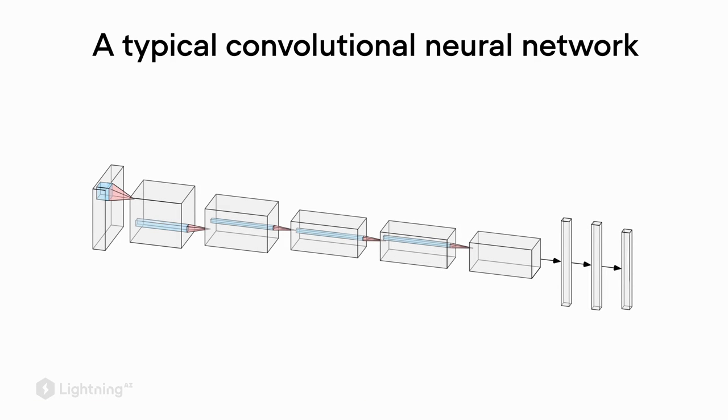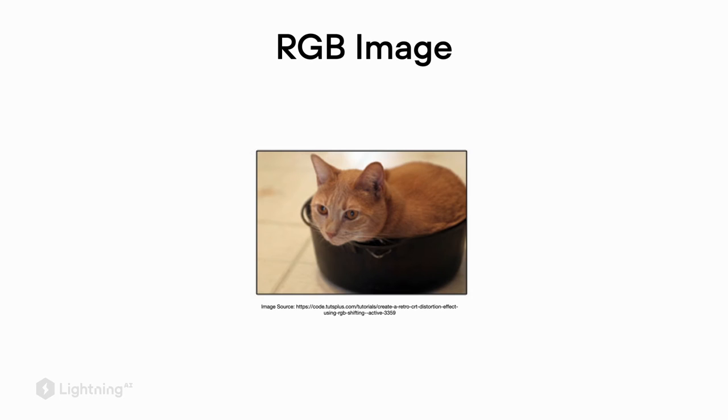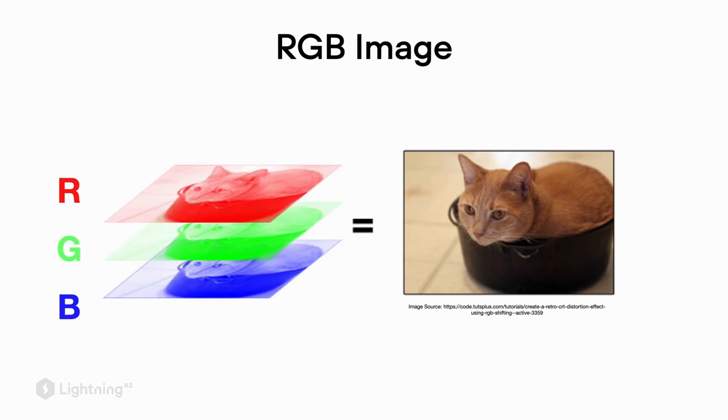To make this more concrete, consider this architecture sketch of a typical convolutional neural network. Here, this convolutional network receives an input image. Typically, that's an RGB image. RGB stands for red, green, and blue, which are the different color channels that make up this image. You can think of an RGB image as a stack of matrices.